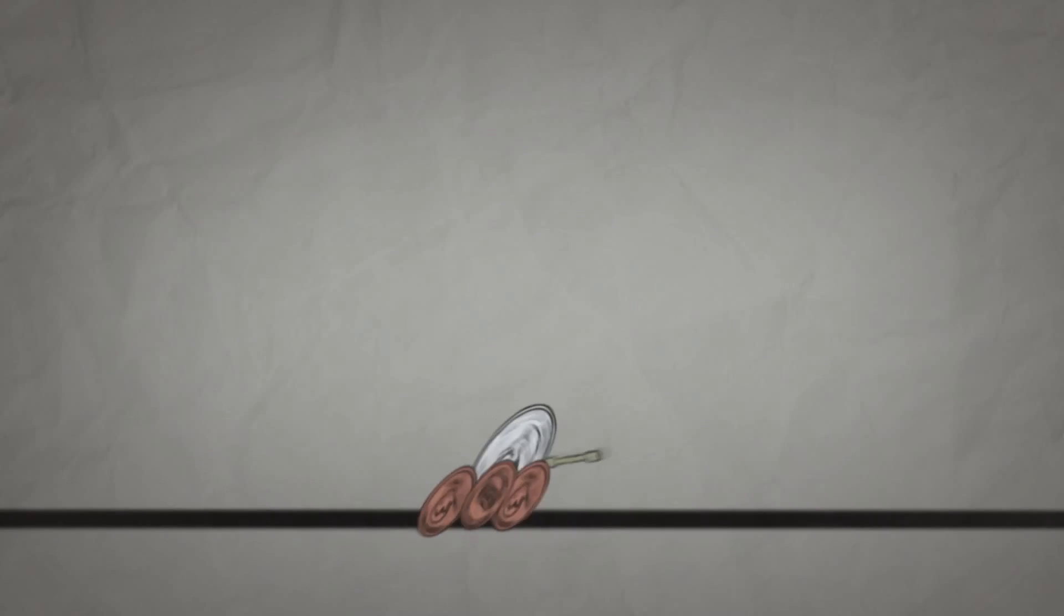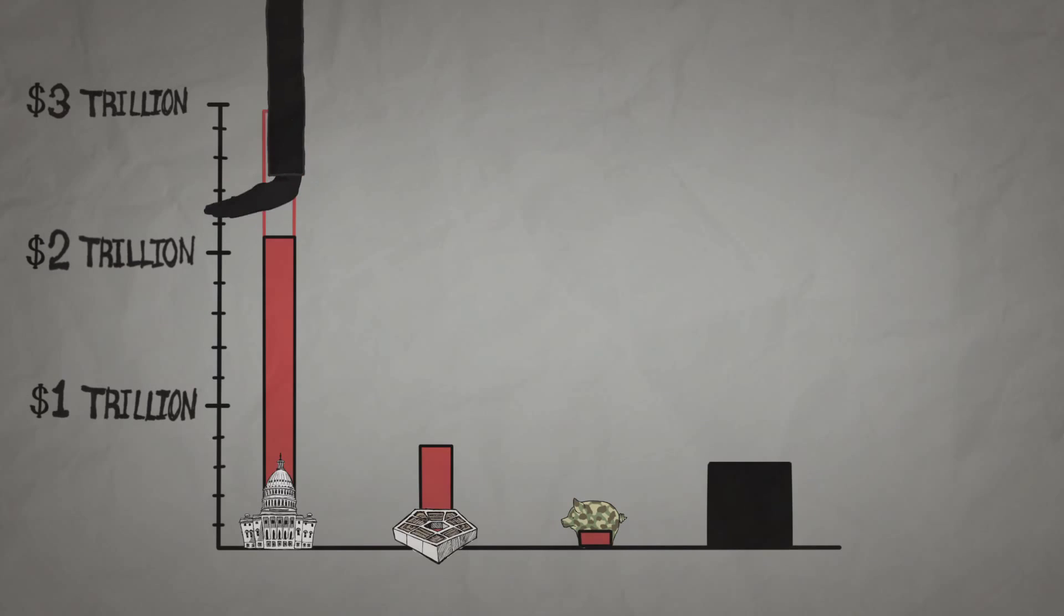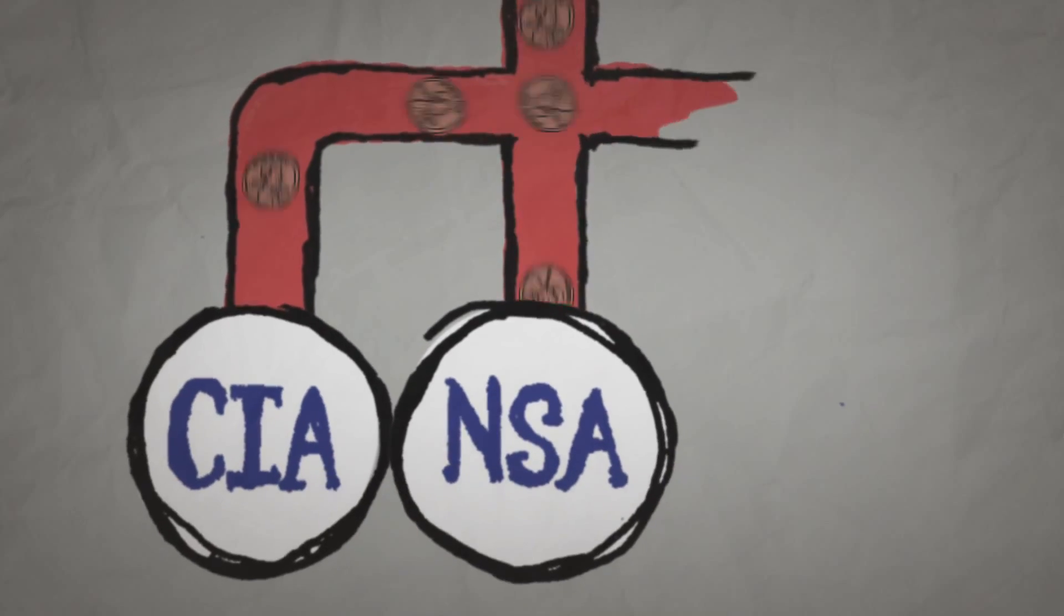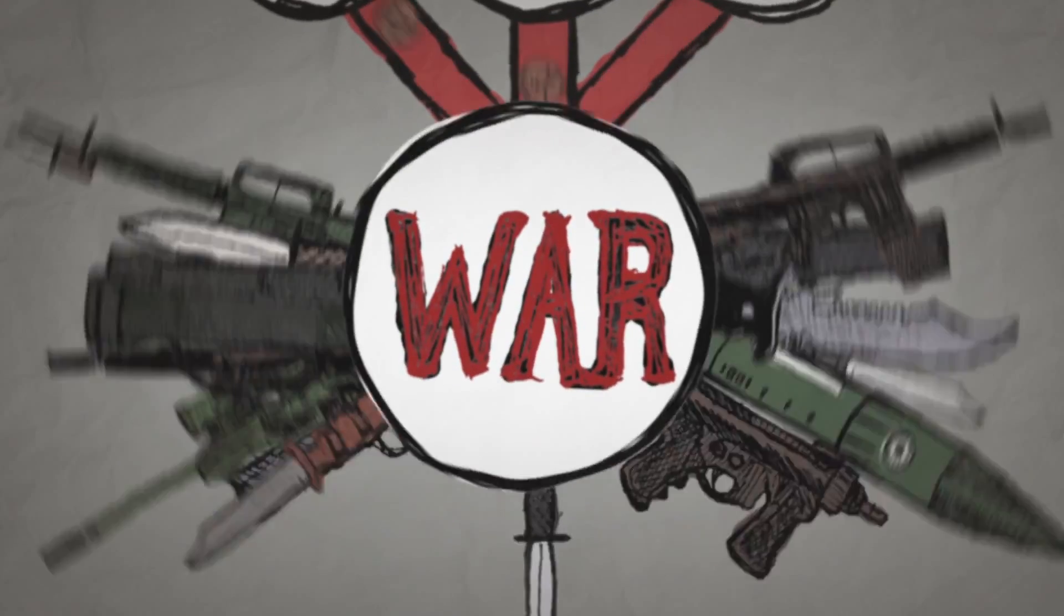Then you got $40 billion in black ops intelligence funding that doesn't get written in the budget. What is that? They never tell us how much they spend on the CIA and the NSA and the DIA and all these different intelligence activities, which are all war-related.